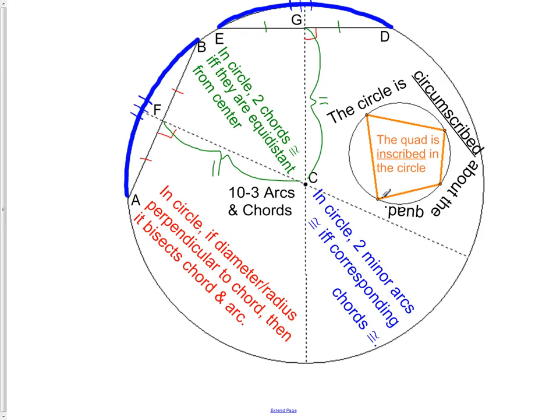However, to be inscribed, the vertices of the quadrilateral all have to touch the circle. If one vertex of that quadrilateral was not actually on the circle, then it would no longer be inscribed. So inscribed means the shape is inside and it also has its vertices on the circle.